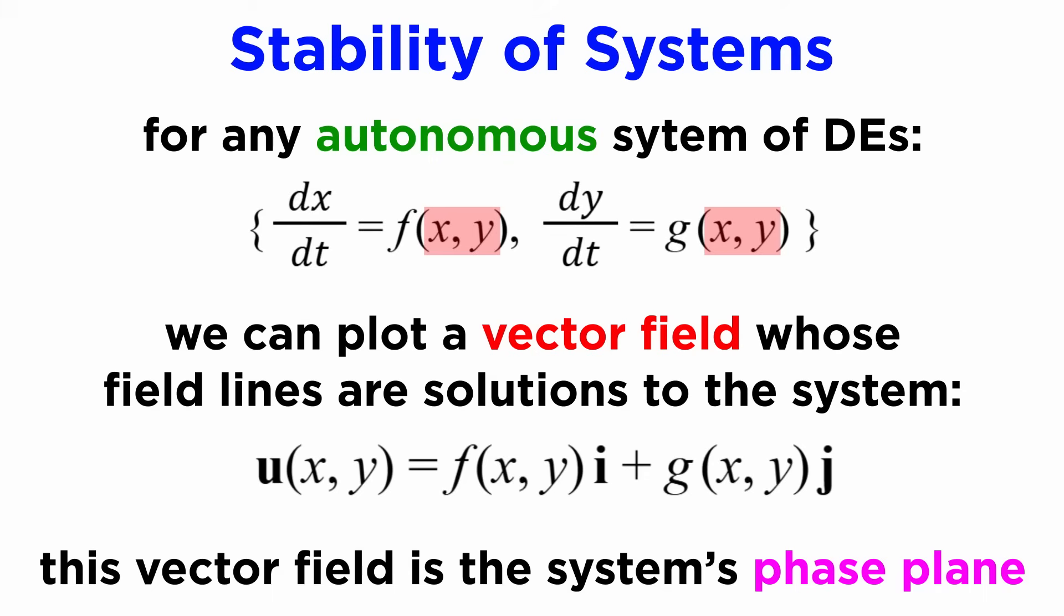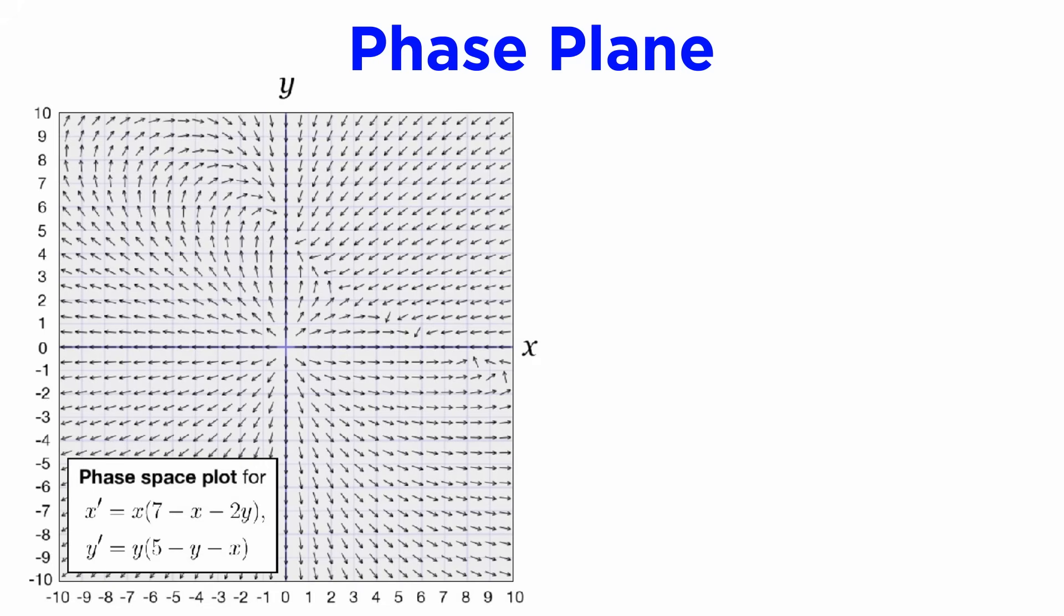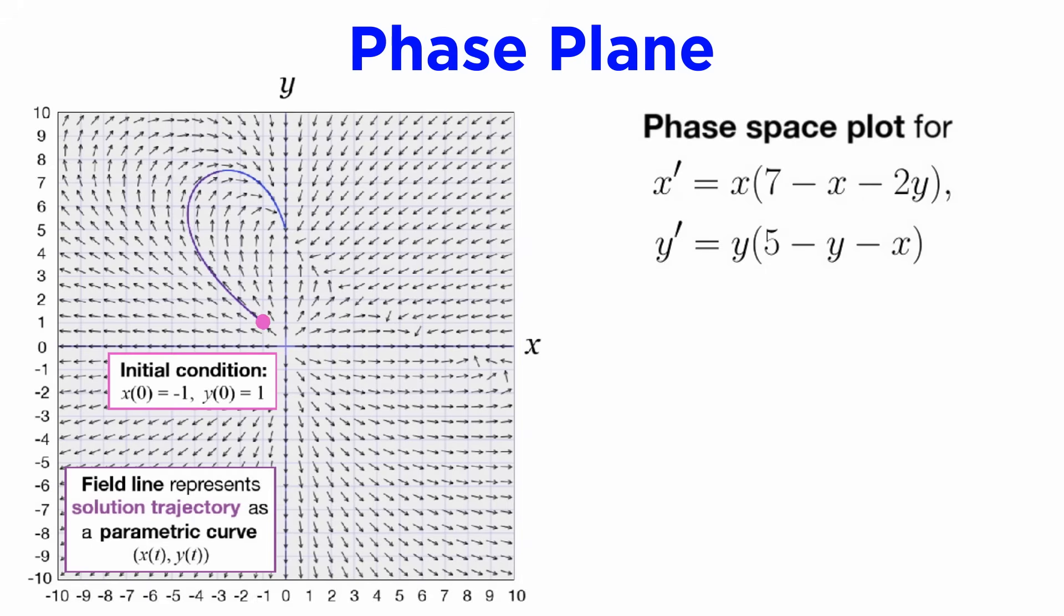For systems with two dependent variables, x and y, we can have a family of general solutions as parametric equations in t. If we draw the tangents to these curves at every point in the plane, we get the phase plane, which shows us graphically how a system will evolve in time from any given initial state, where the state of the system follows trajectories in the phase plane.